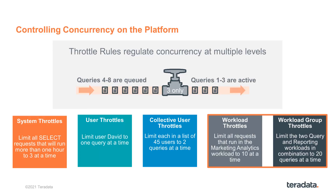And then each workload, if you wish, you can have a throttle limiting how many requests will be allowed to be active, or how many load jobs will be allowed to be active. The theory of throttle rules is that if a query would cause the throttle rule to exceed its limit, it's placed in a delay queue. It will eventually run, but only when one of the active queries in that category completes — so you're just delaying its onset, not rejecting the query.